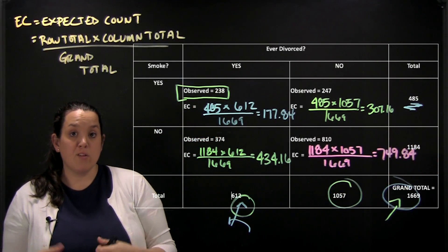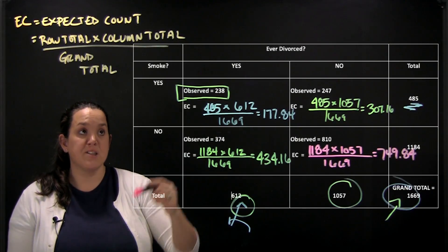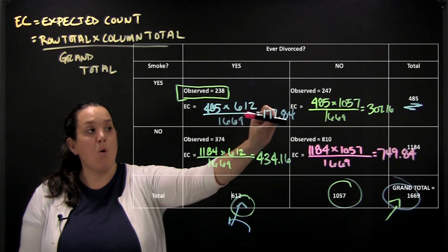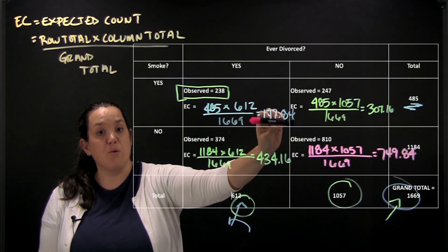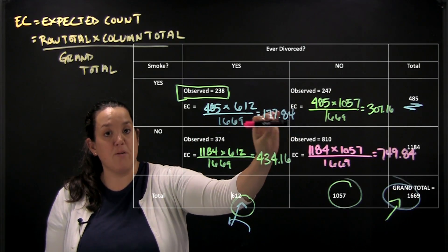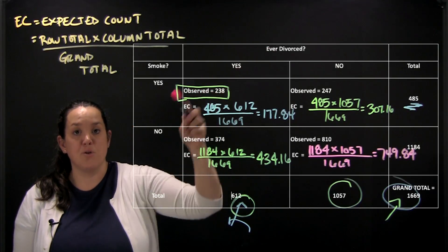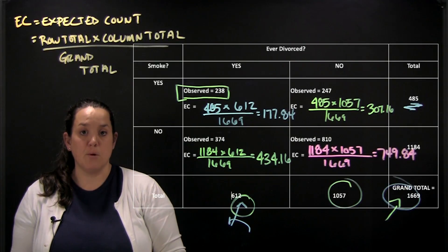So what we'll ultimately use expected counts for is to see if there's a big enough difference between what we saw or the observed count and what we would expect to see if there was no relationship, which is what we call the expected count, to justify a relationship between the two variables that are shown on the contingency table.